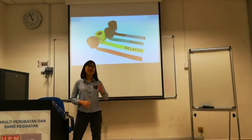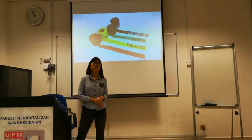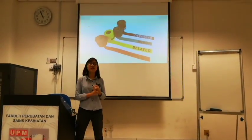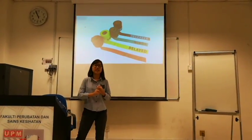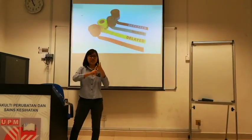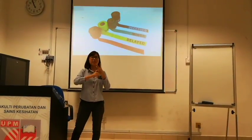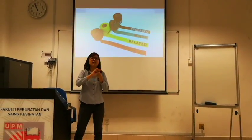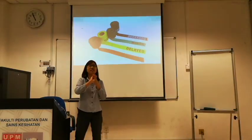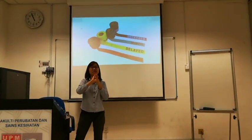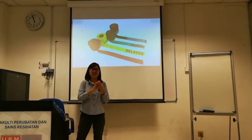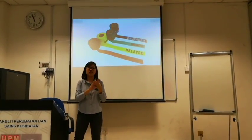There are 4 categories of triage. The first one is the red one, which is immediate. Then yellow, green, and black. The black one is the worst condition — that means the casualty has no pulse and no breathing. The casualty is dead.